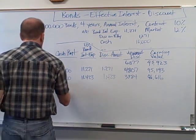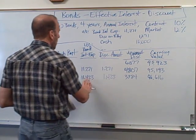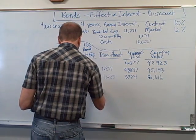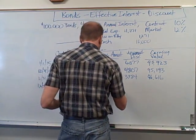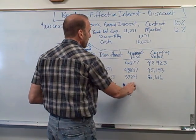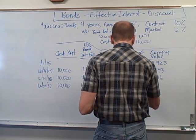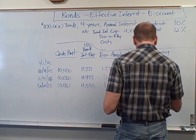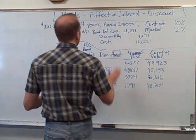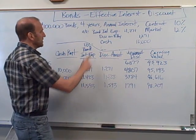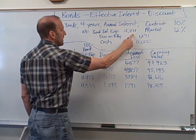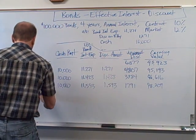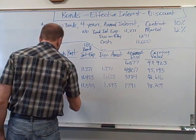For December 31st year three (2017): cash payment is still $10,000. Interest expense is 12% × $96,616 = $11,593. Discount amortization is $11,593 − $10,000 = $1,593. Subtracting from the unamortized discount: $3,384 − $1,593 = $1,791 remaining. New carrying value: $100,000 − $1,791 = $98,209. Journal entry: Bond Interest Expense $11,593, Discount on Bonds Payable $1,593, Cash $10,000.